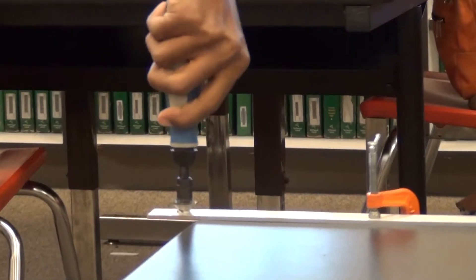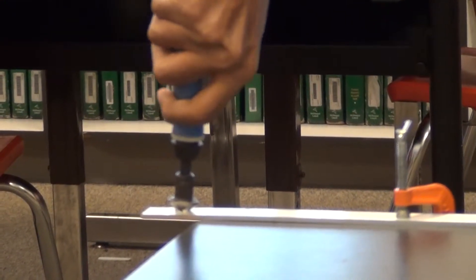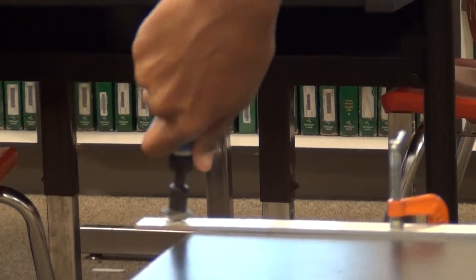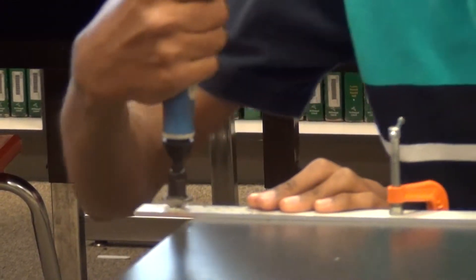So to deburr this, we take the deburring tool, we force it into the hole, and then we turn it. And the deburring tool removes all of the sharp filings from the outside.